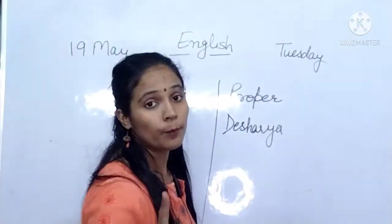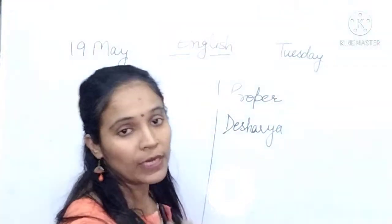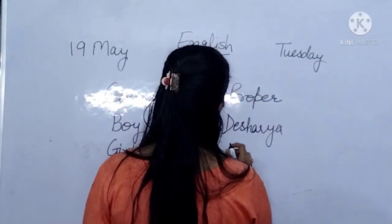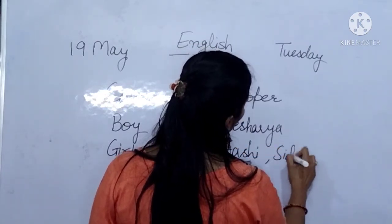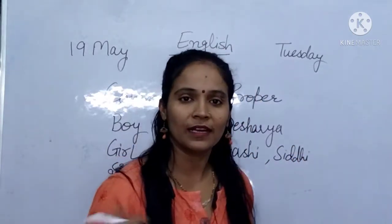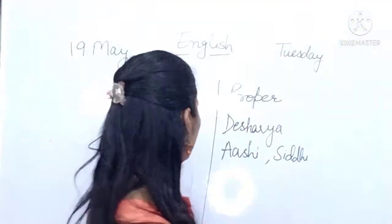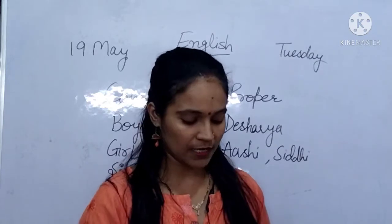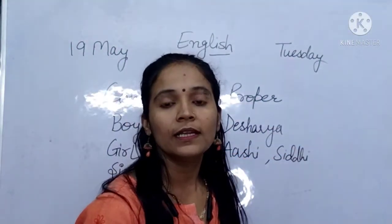If any girl's specific name comes, we write her name — like Siddhi. Now any teacher — she is a very good teacher — if we write a teacher's name specifically, it goes into proper noun. Common names are like boy, girl, any sir, any ma'am. If we specifically mention anyone's name, it is called proper noun. Kisi bhi country ka name — like India is a very good country — toh India is a proper noun.